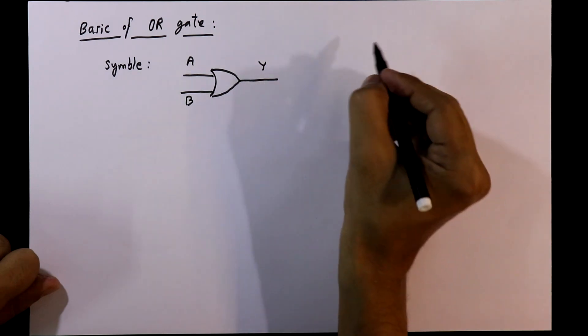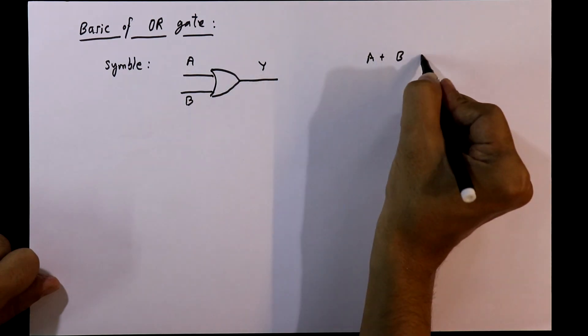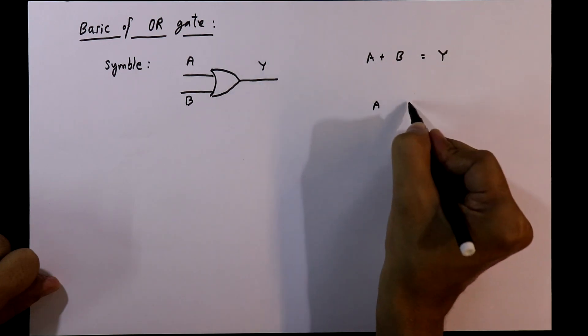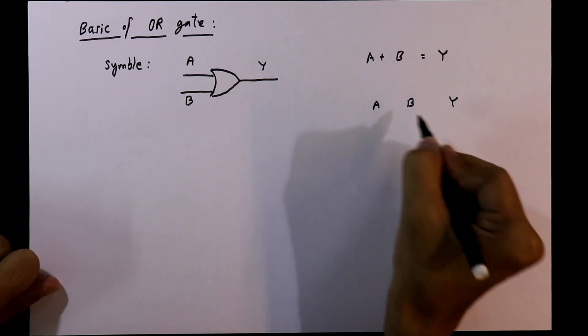The mathematical expression is A plus B equal to Y. And its truth table. These two inputs and Y is the output.